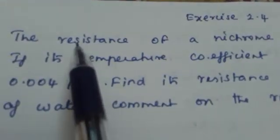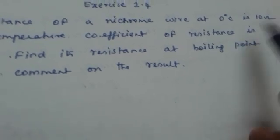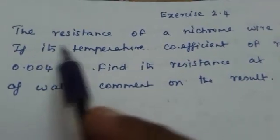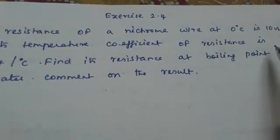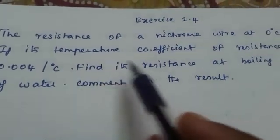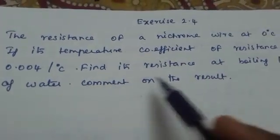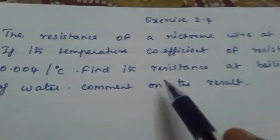Exercise 2.4. The resistance of a nichrome wire at 0 degrees is 10 ohms. If its temperature coefficient of resistance is 0.004 per degree centigrade, find the resistance at boiling point of water, comment the result.